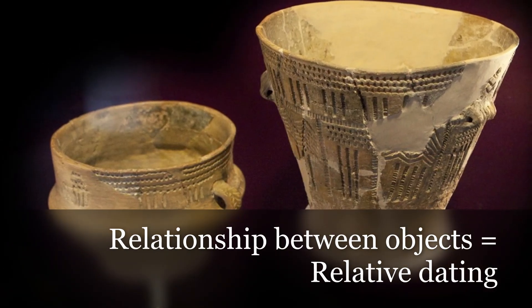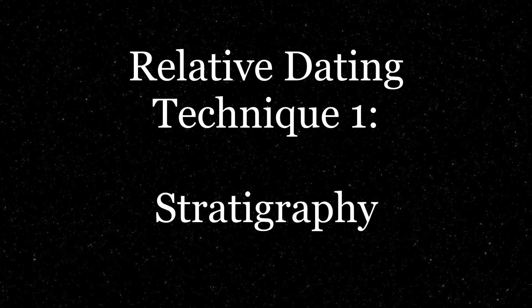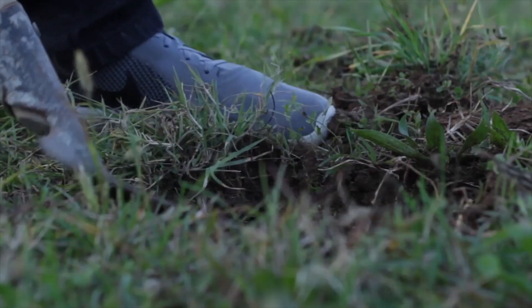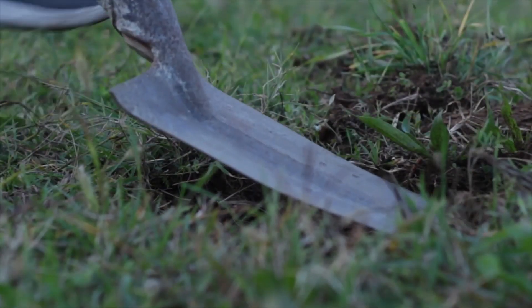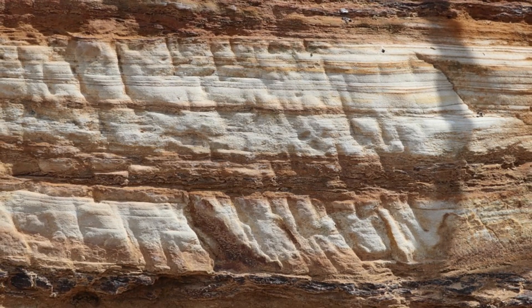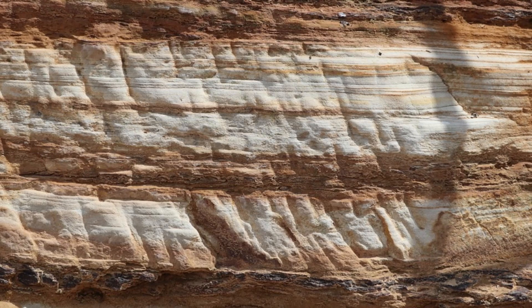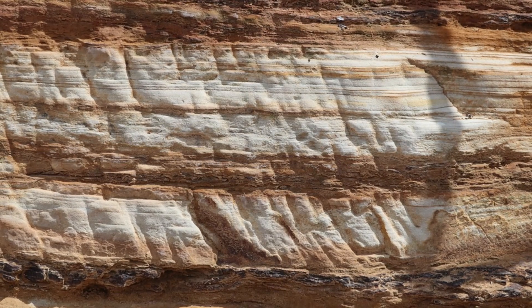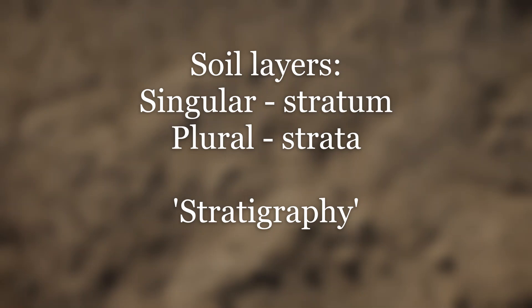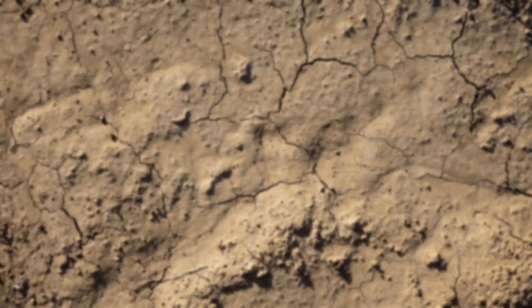Here are some specific ways archaeologists know which objects are older or younger. Firstly, there is a technique known as stratigraphy — the study of soil layers in which individual artefacts are found. Geologists have noticed for centuries that layers of soil have different colours, indicating different periods of time when the soil was created. A single layer is called a stratum, and multiple layers are called strata, so this system of relative dating is called stratigraphy.